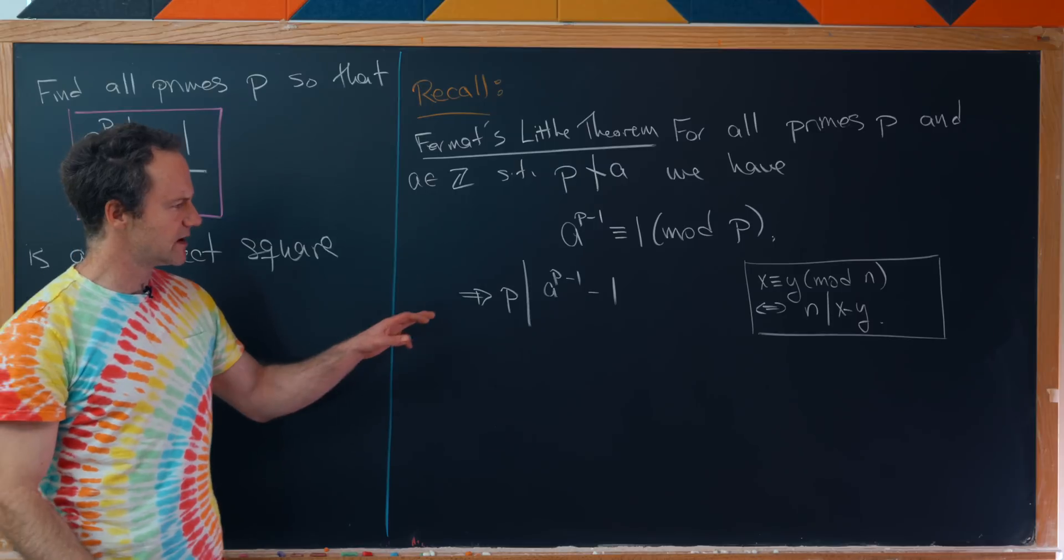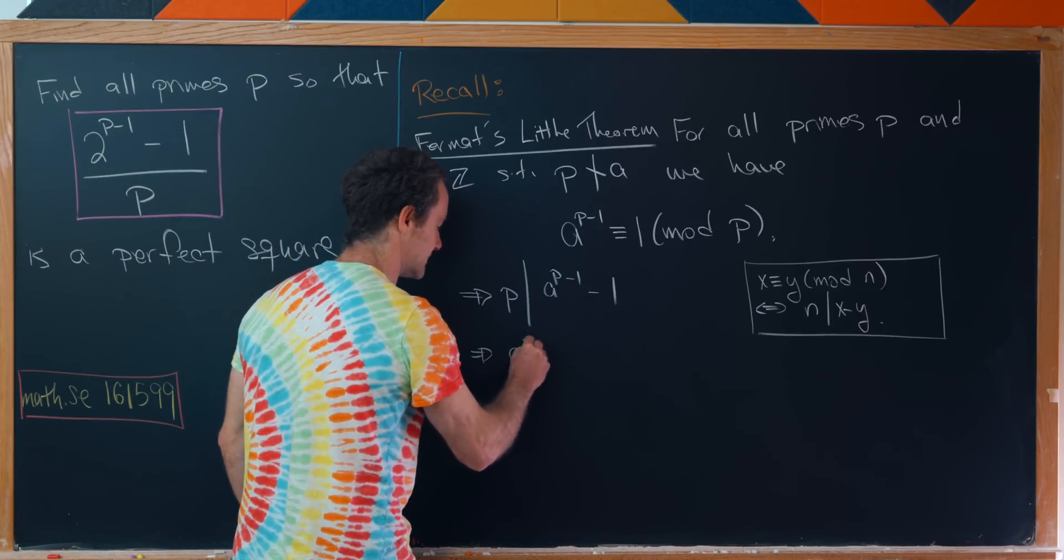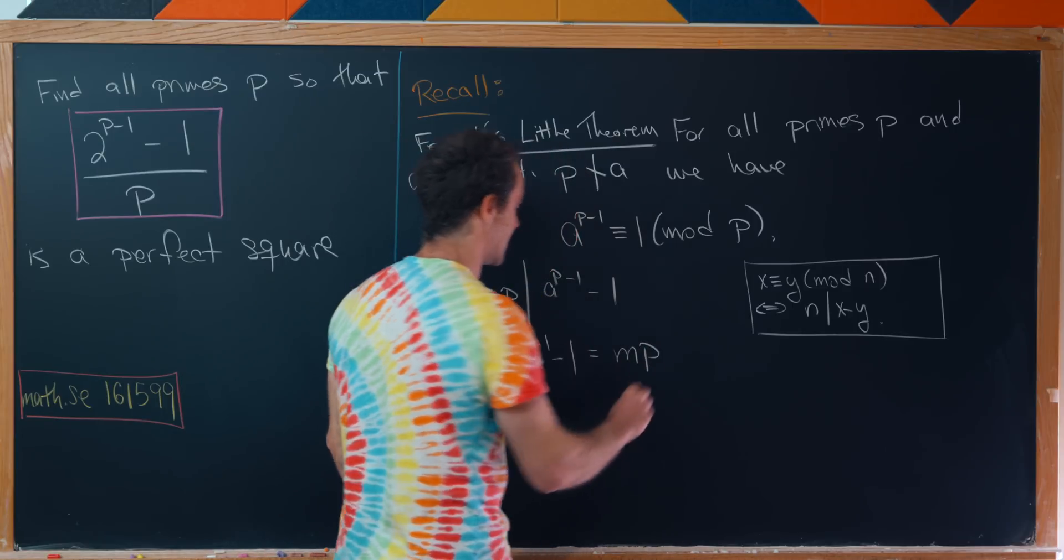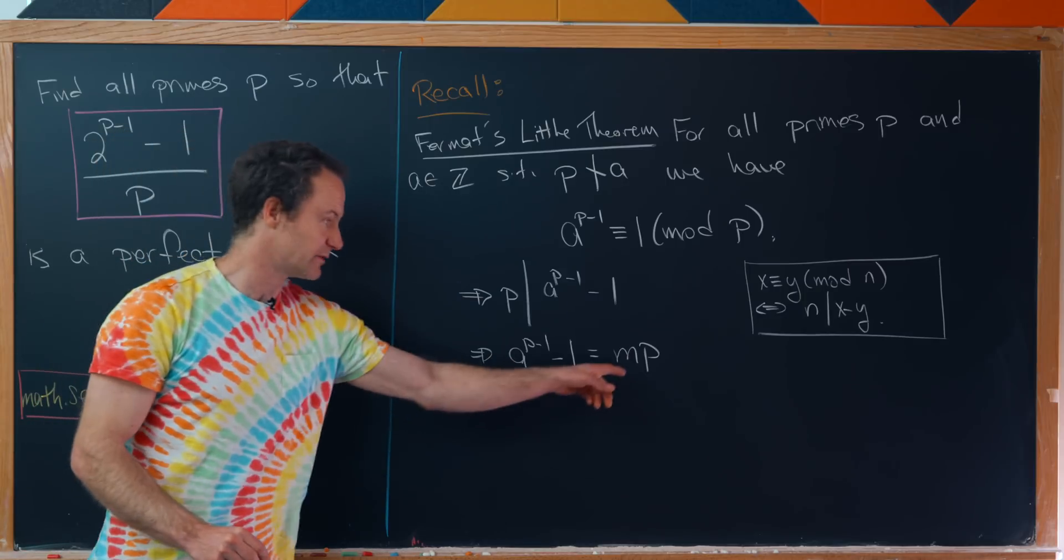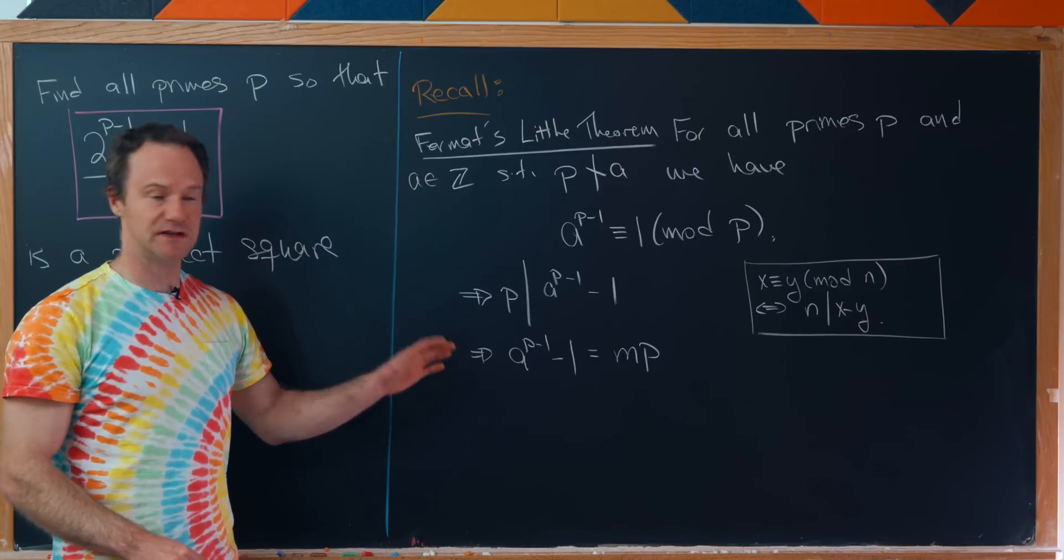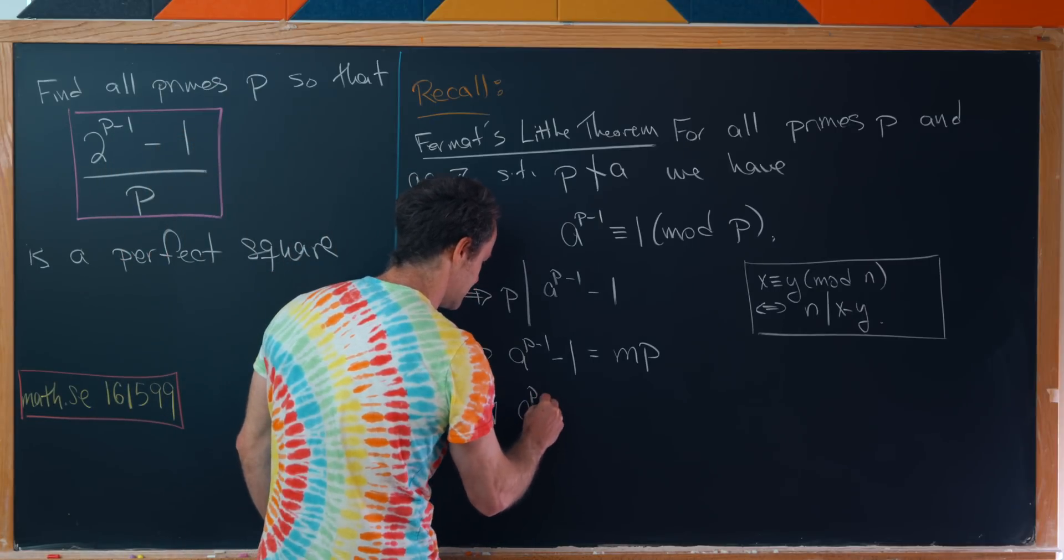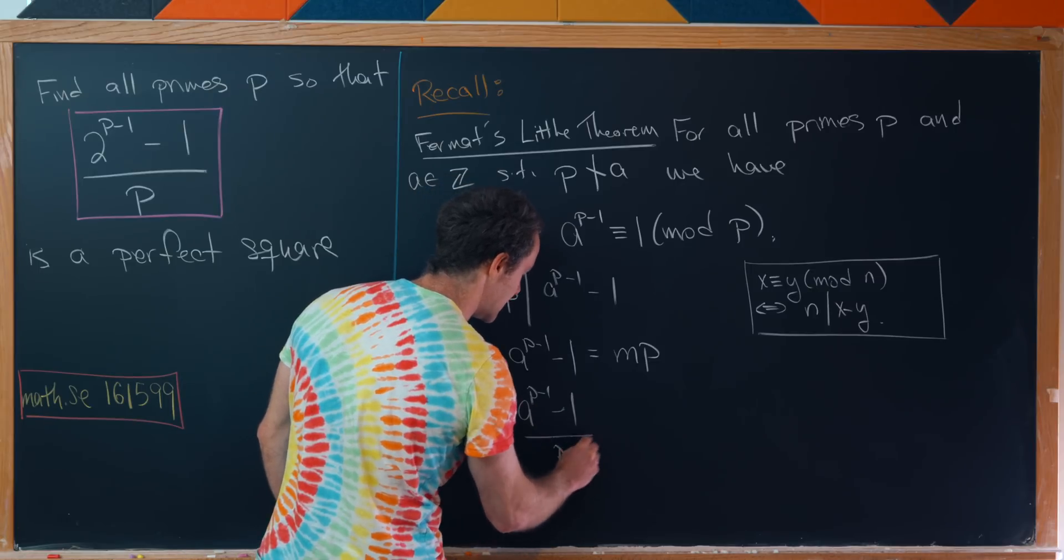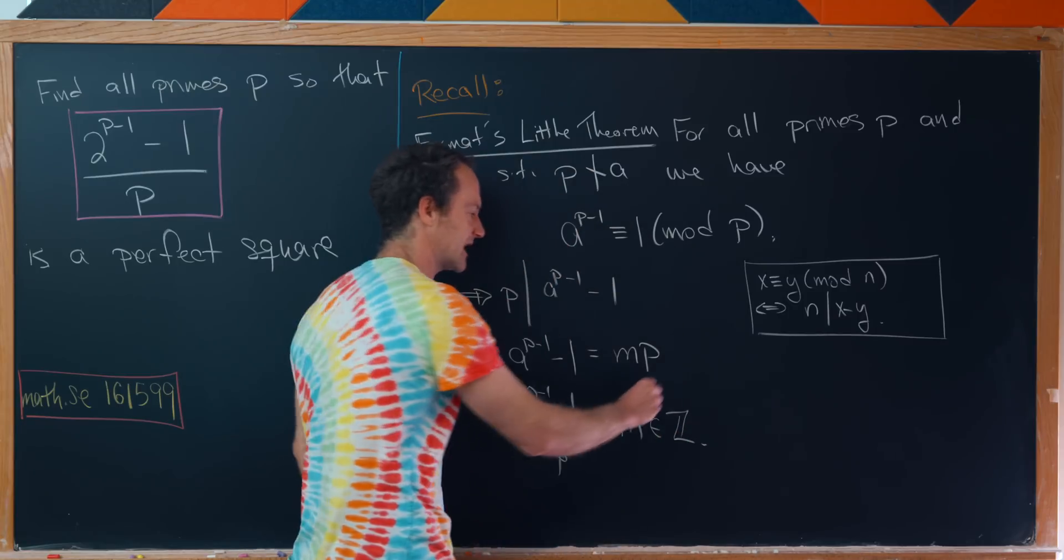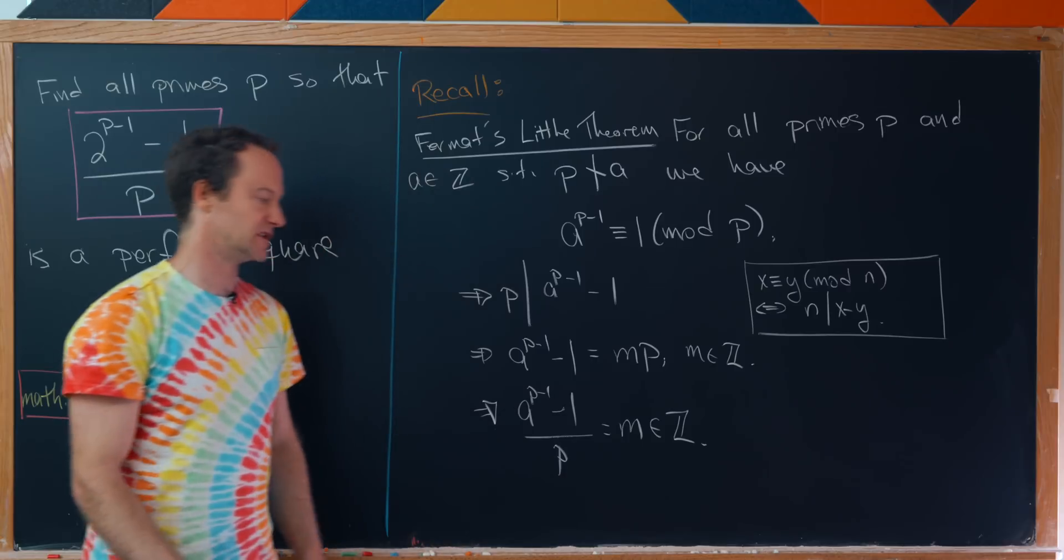If p divides a^(p-1) - 1, then we can write a^(p-1) - 1 as m times p, a multiple of p. Next we could divide by p and we'll have the following formula: (a^(p-1) - 1)/p equals m, where m is in fact an integer. That follows from the definition of divisibility.